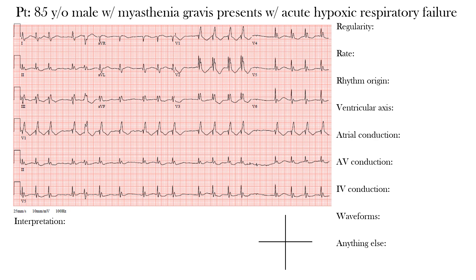Before we get started, let's review the approach we've been using to interpret EKGs. We have the patient's clinical presentation and the EKG below. On the right side of the screen you'll find a list that we'll go through before making our final interpretation. First, we'll look at the regularity of the rhythm — are we dealing with a regular or irregular rhythm, and if irregular, is it regularly irregular or irregularly irregular? Next, we look at the heart rate.